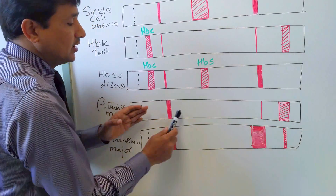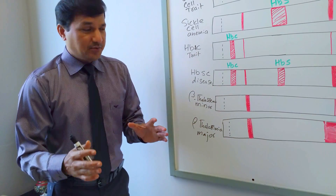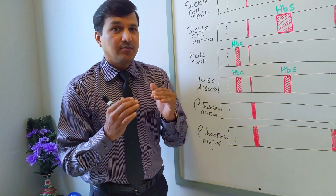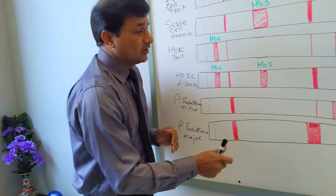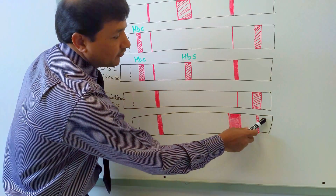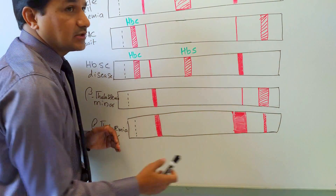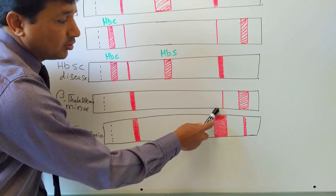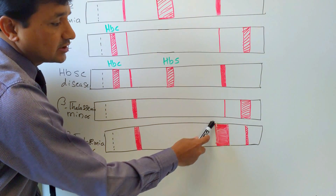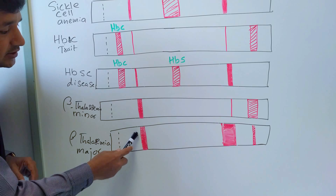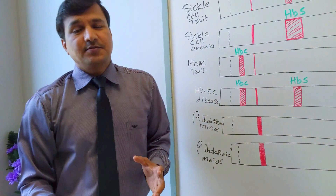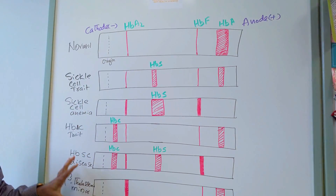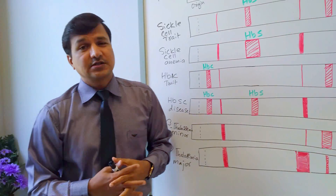In beta thalassemia major, both beta globin genes are mutated, so normal adult hemoglobin synthesis is drastically reduced — only a very little amount is synthesized. As a compensation, the body has significantly increased fetal hemoglobin, as you can see, and minor adult hemoglobin HbA2 is also increased. These are all the different hemoglobinopathies and their electrophoresis bands, which are commonly asked in exams. Thanks for watching.